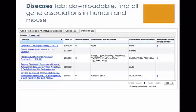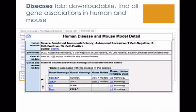On the Diseases tab, also downloadable, you can find all gene associations in both human and mouse. Clicking on a hyperlinked disease takes you to a Human Disease and Mouse Model Detail page — in this case for severe combined immunodeficiency. This provides another visual display of genes associated in mouse, genes associated in human, and where both the human and mouse icons appear next to the same row, it indicates a gene disease-associated in both species.